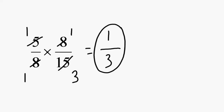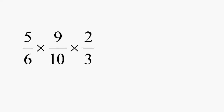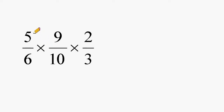Now let's try multiplying 3 fractions together — the same rules still apply. Select 1 numerator and 1 denominator that share a common factor. The number 5 on top and 10 at the bottom stand out — their greatest common factor is 5. Another way to think about it: 5 over 10 reduces to 1 half, so cross off the 5 and the 10 and replace them with 1 and 2. It's like reducing fractions hidden within the problem.